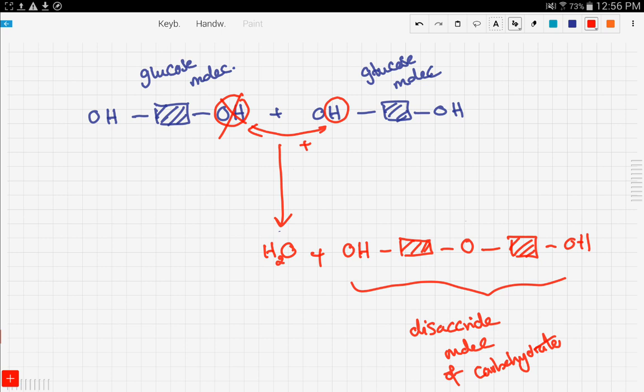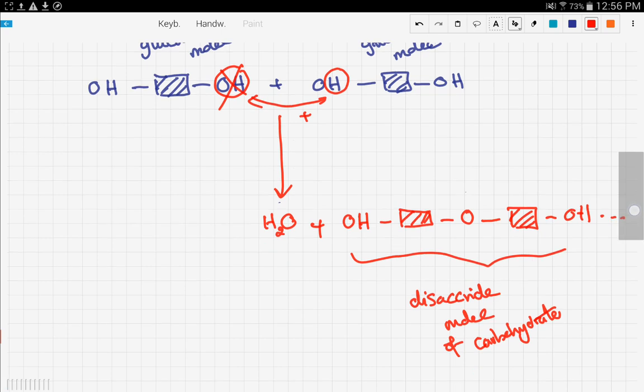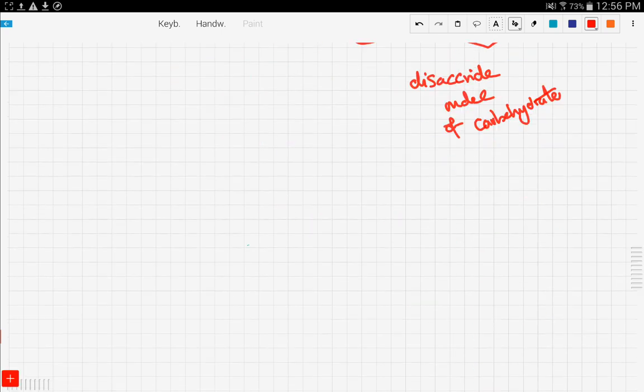Now, this is how we make carbohydrates. Now, if we increase the length of this, if we keep on adding more and more units right here, then we get a polysaccharide carbohydrate. And this is gonna be the following. So let's draw a polysaccharide.